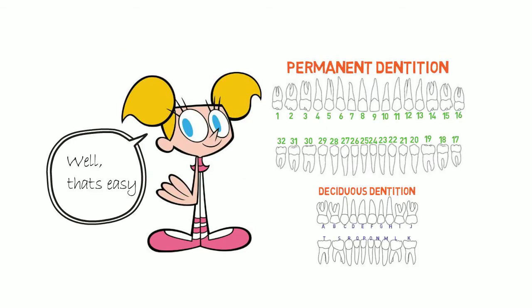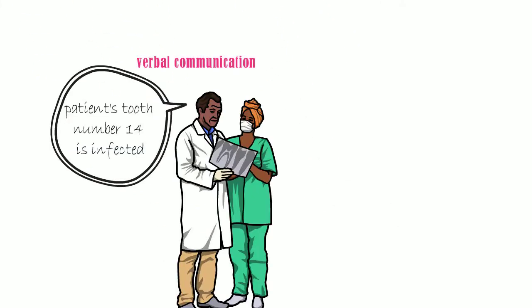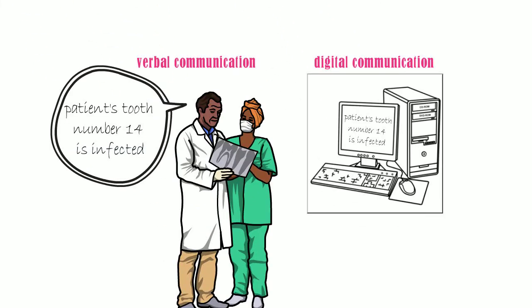The universal system is very simple to understand. Numbers for permanent teeth and alphabets for deciduous teeth makes the distinction very easy. It is easy to communicate verbally as well as on the computer.